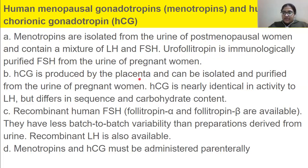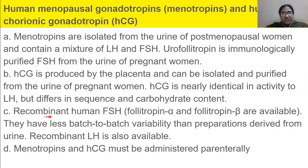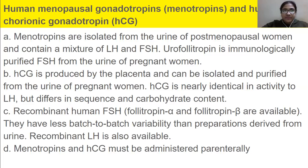HCG is produced by the placenta and can be isolated and purified from the urine of pregnant women. Those pregnancy test sticks that women use to check if they have conceived actually show the HCG result. HCG is nearly identical in activity to LH but differs in amino acid sequence and carbohydrate content. Recombinant human FSH is also available — I want you to search what 'recombinant' means.